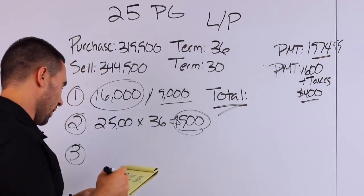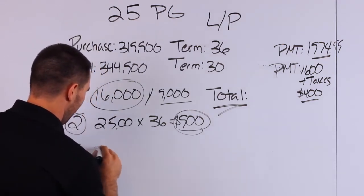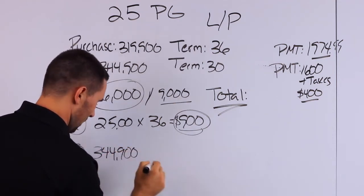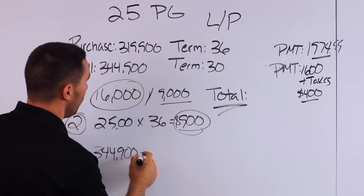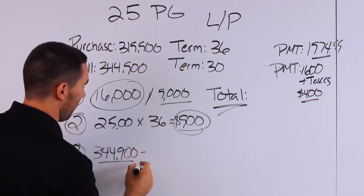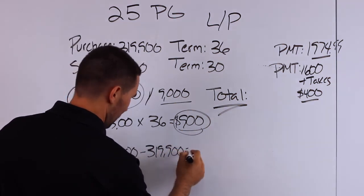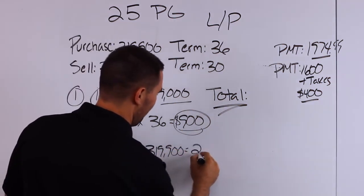Payday number three. So let's break this down. So we bought it for $344,900. I'm sorry, we sold it for $344,900. We bought it for $319,900. So there's a spread there of $25,000.